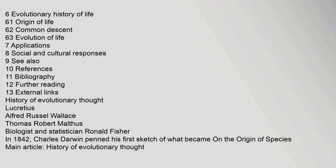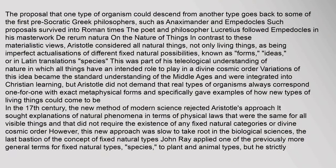History of Evolutionary Thought: The proposal that one type of organism could descend from another type goes back to some of the first pre-Socratic Greek philosophers, such as Anaximander and Empedocles. Such proposals survived into Roman times — the poet and philosopher Lucretius followed Empedocles in his masterwork De Rerum Natura. In contrast, Aristotle considered all natural things as imperfect actualizations of different fixed natural possibilities known as forms, ideas, or — in Latin translations — species.